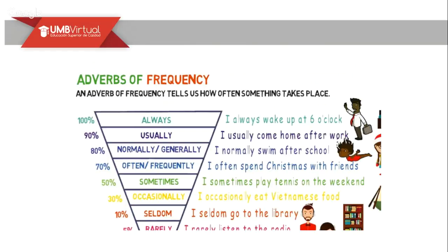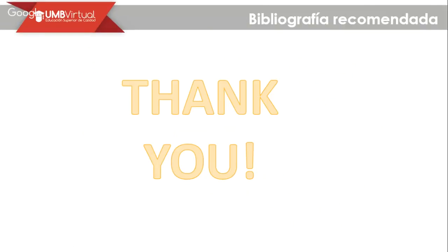All of these examples are regarding adverbs of frequency. Remember the grammar code — subject, adverb of frequency, verb, complement. Always means 'siempre,' usually, normally, generally, frequently, sometimes, occasionally, almost never, rarely, and 'never' means 'nunca.' For example: I never smoke.